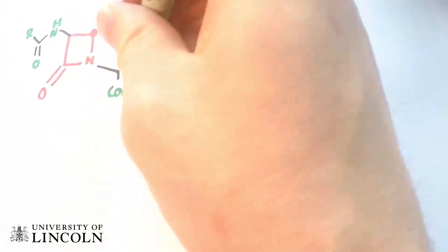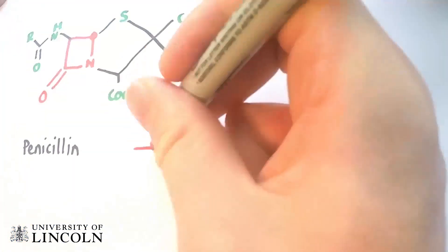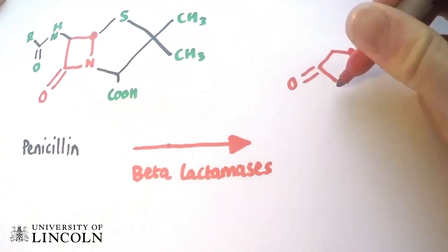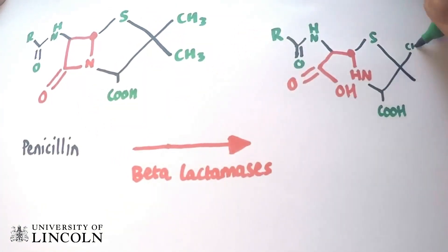Beta-lactamases hydrolyze the beta-lactam ring structure. In this example, penicillin is hydrolyzed into penicilloic acid as a result of the beta-lactam ring breaking open.